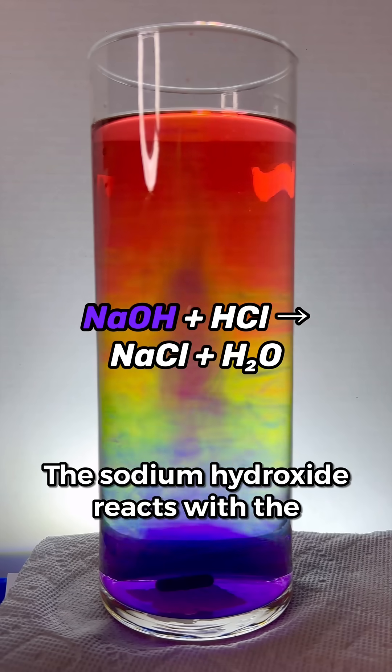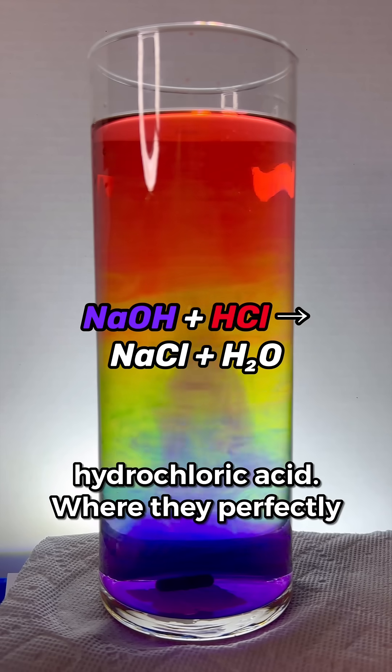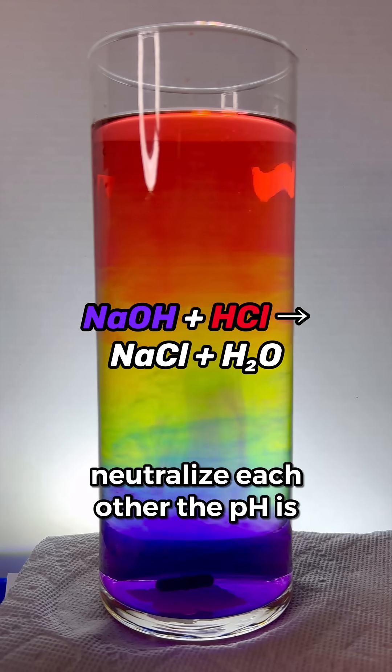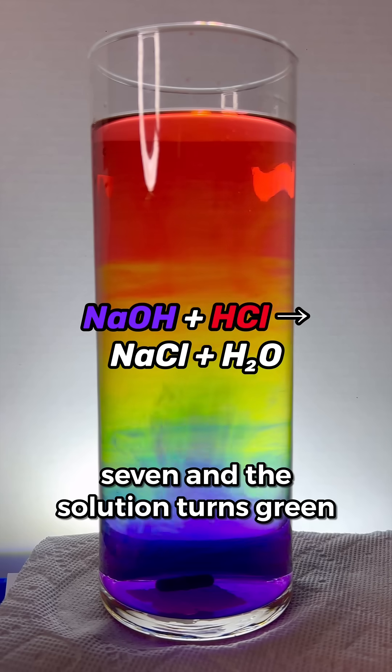The sodium hydroxide reacts with the hydrochloric acid. Where they perfectly neutralize each other, the pH is 7, and the solution turns green.